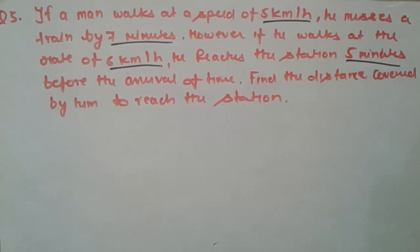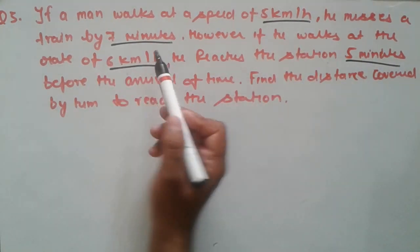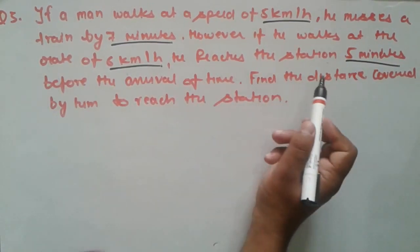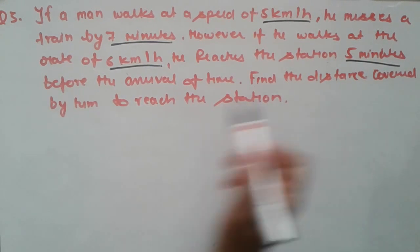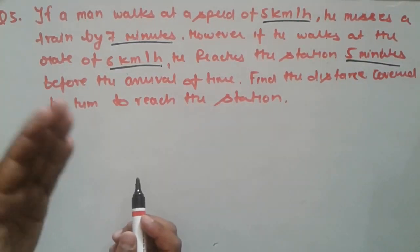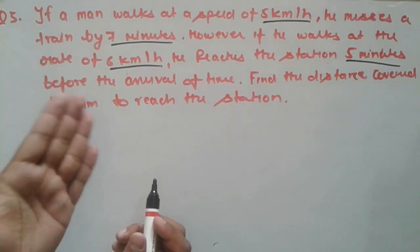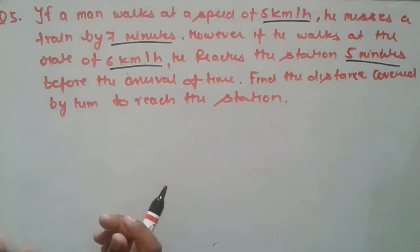Here is the third question. If a man walks at a speed of 5 km per hour, he misses a train by 7 minutes. However, if he walks at a rate of 6 km per hour, he reaches the station 5 minutes before the arrival time. Find the distance covered by him to reach the station. When he travels at 5 km/h he is 7 minutes late, and at 6 km/h he is 5 minutes early.